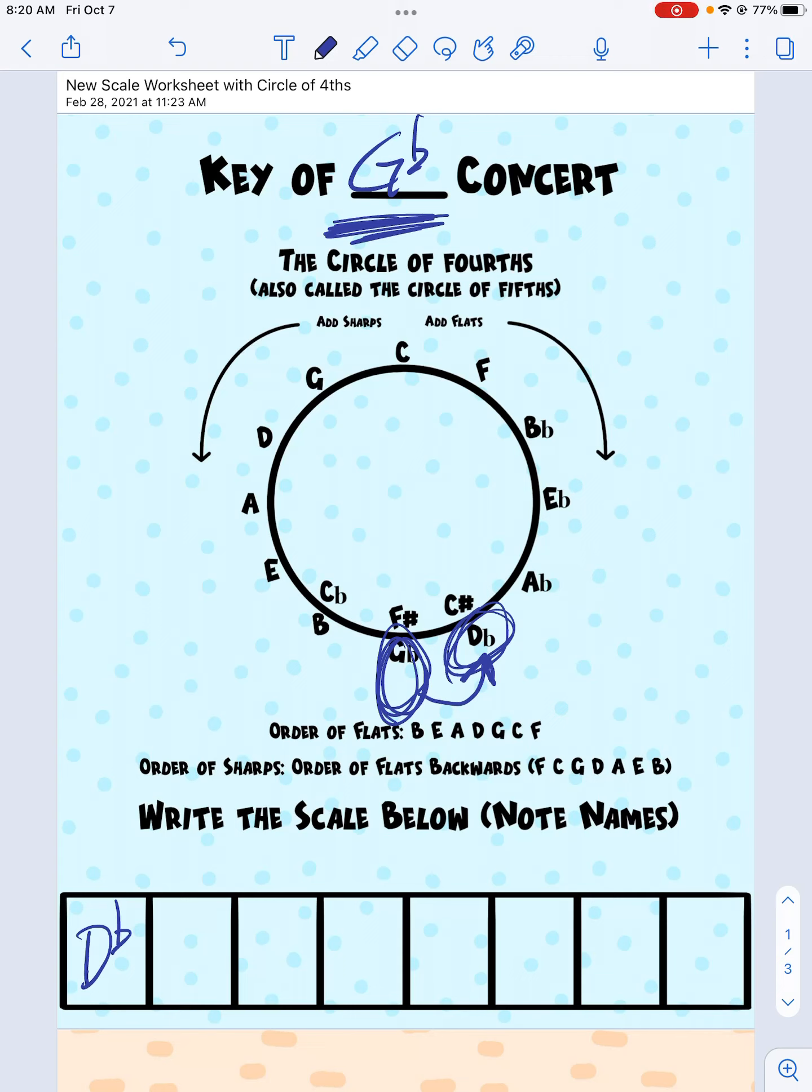Now I write letters in order. So I'm just in order of the alphabet, right? D, E, F, G. I'm just going through the alphabet. There's no H, so I start over again at A, and then I keep climbing my way up, and I will land on the note with which I started. So now I have letter names.